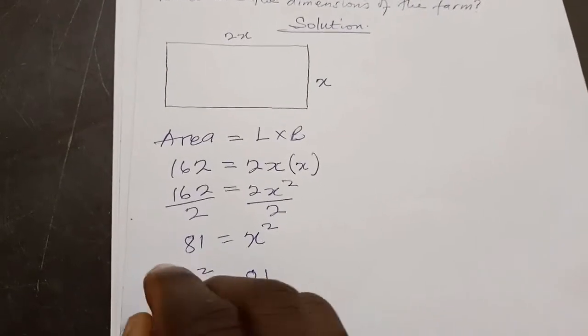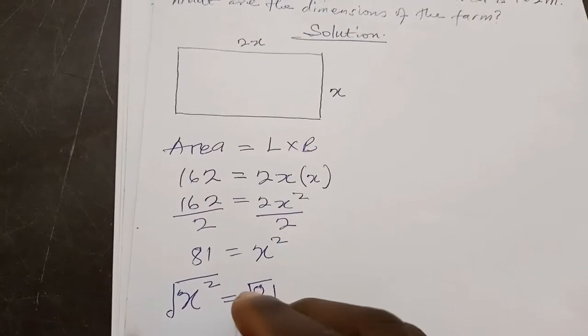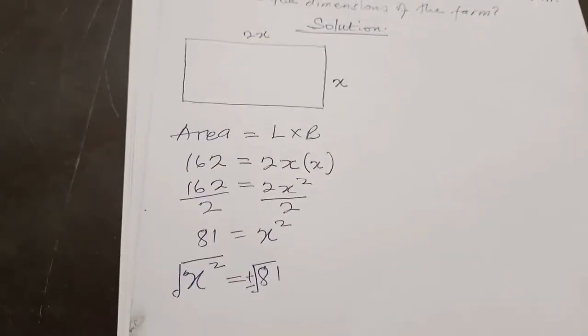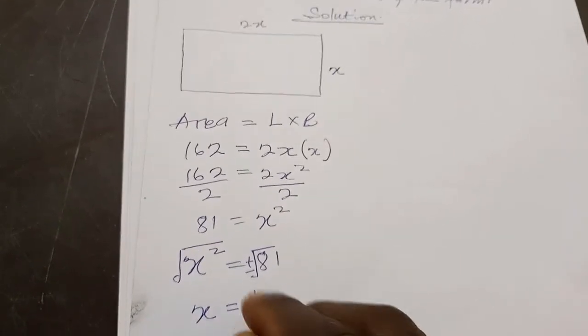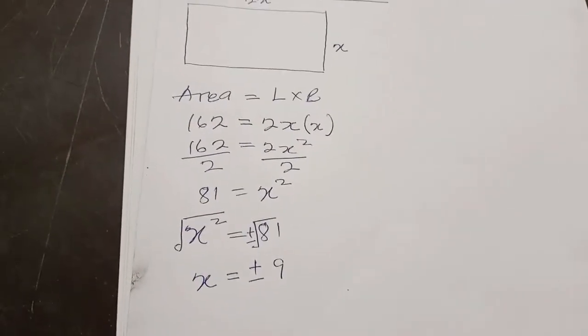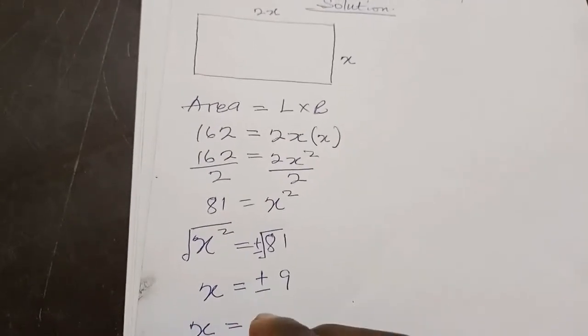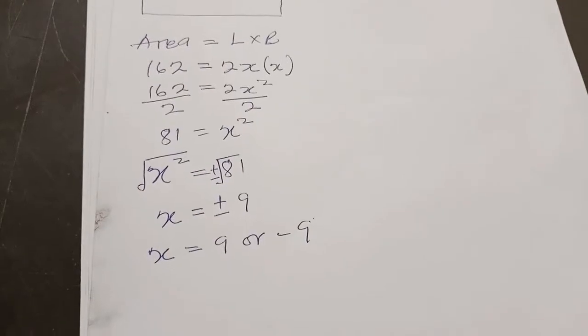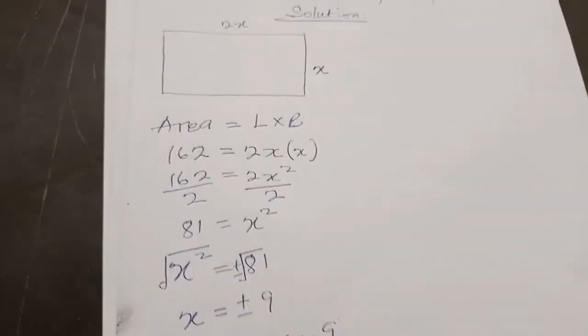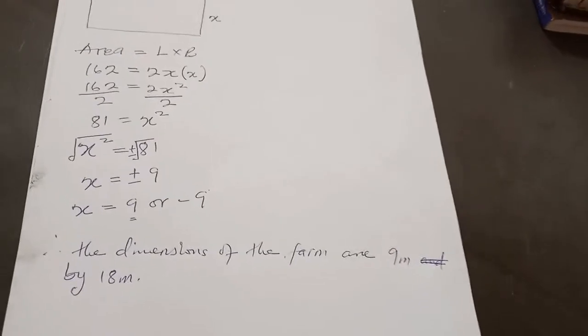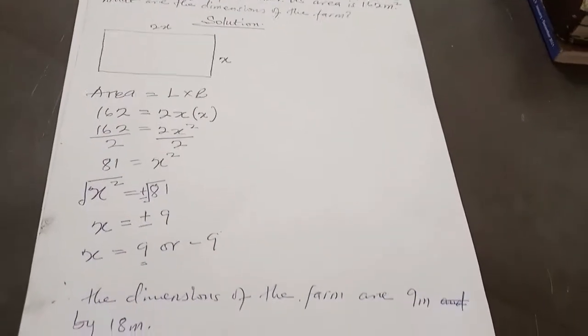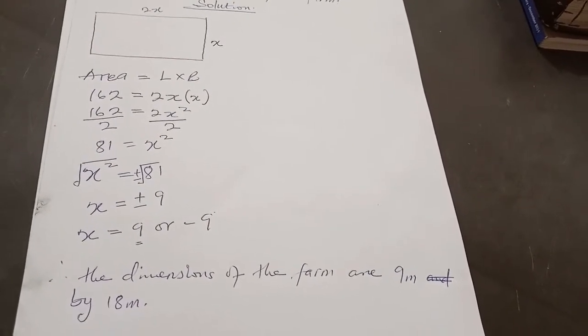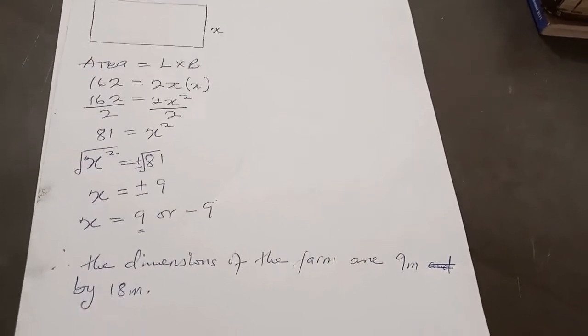Taking the square root of both sides: the square root of X squared gives us plus or minus the square root of 81, which gives us X equals plus or minus 9 because the square root of 81 is 9. That means X equals 9 or negative 9. But here we are talking about dimensions and we cannot measure dimensions in negative terms, so we are going to pick the positive answer. Therefore, the dimensions of the farm are 9 meters by 18 meters — the length is 18 meters and the width is 9 meters.